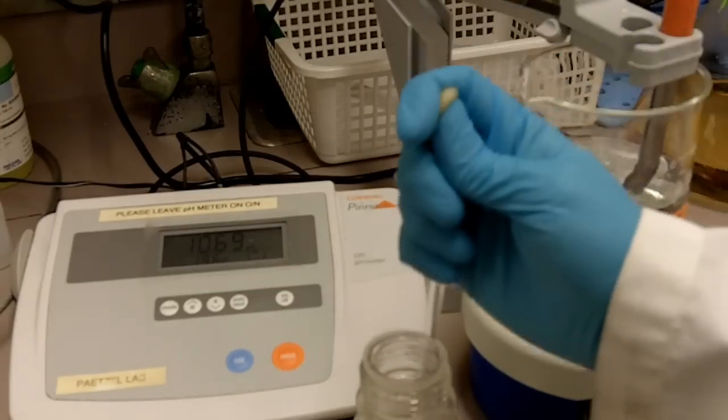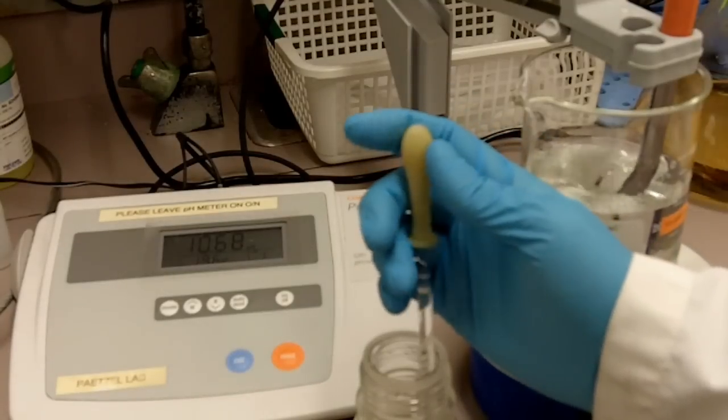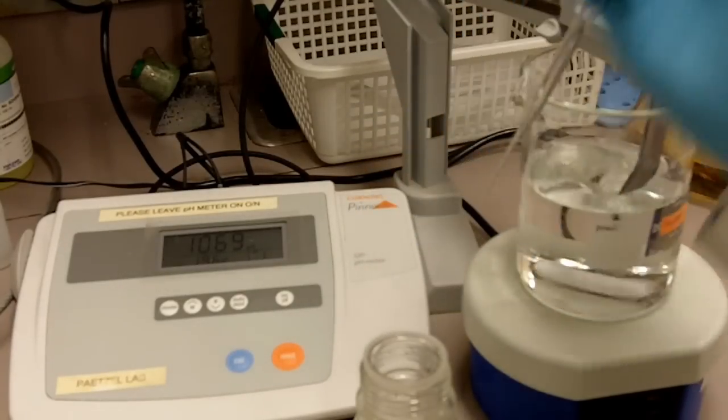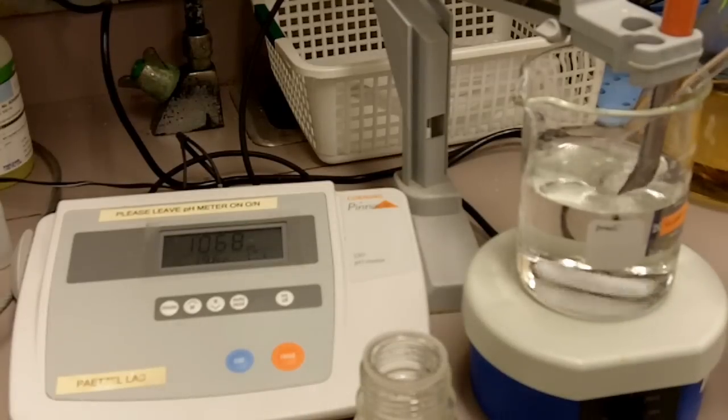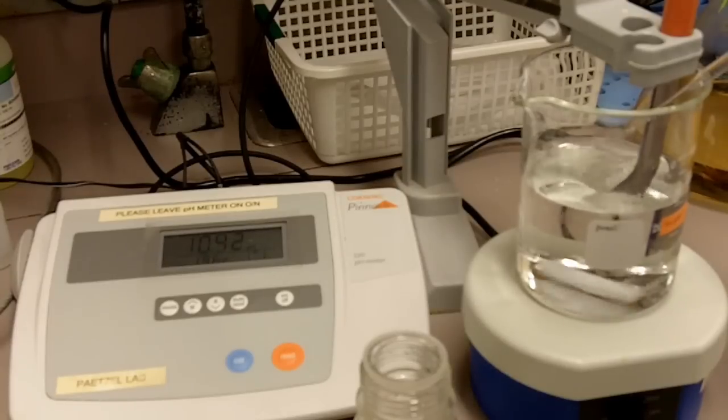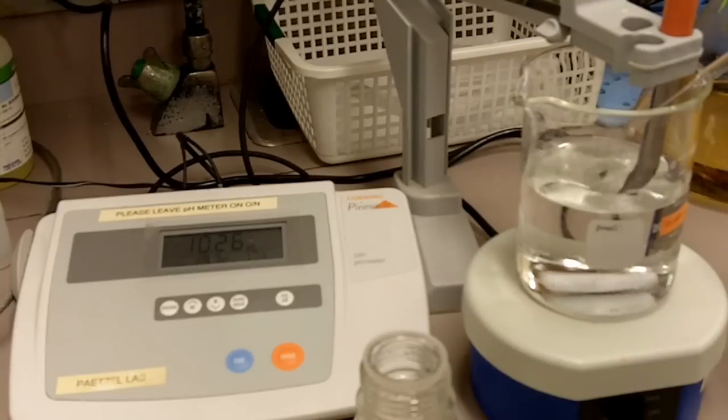What we're going to do is we're going to slowly add the acid to the buffer. The reading is going to change really fast right now because the pH is not in the buffering range of the buffer. But once the pH hits the buffering range, it's going to slow down. So right now it's at about 10.2. We'll keep on adding drop by drop.